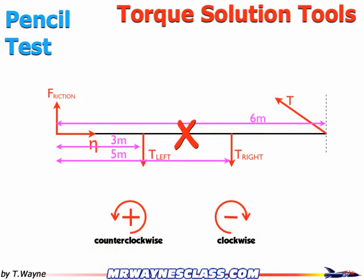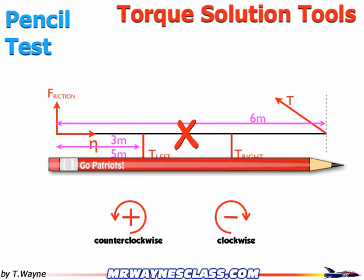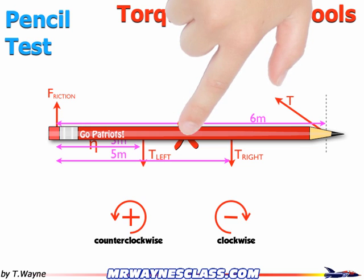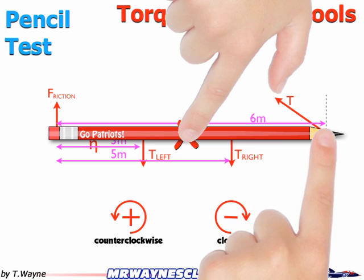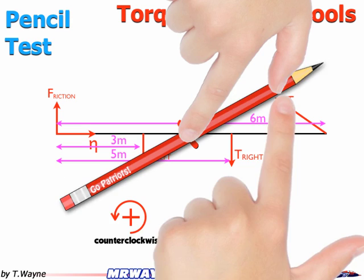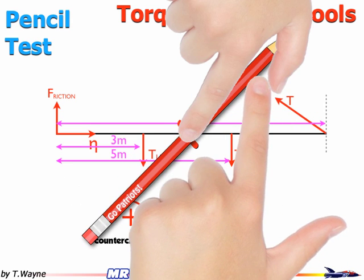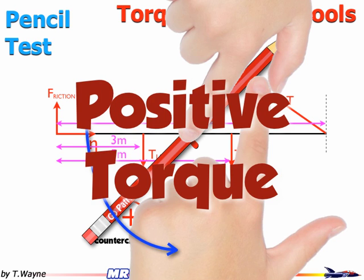Let's keep going for the last force. I put the pencil in place, hold it at the pivot point, and take my other finger to the tension on the far right. I move in the direction of the force and can see what the pencil is doing — it's moving in a counterclockwise direction. That's going to give me a positive torque.